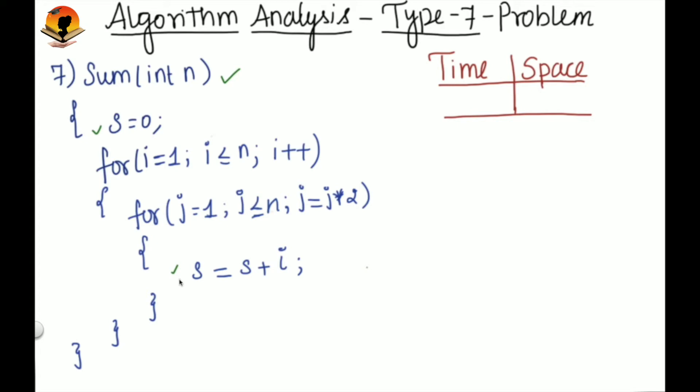Now look at this problem. Here this declaration statement takes one unit of time because it will be executed only once, and then this statement is present inside the nested loop. So we have to find out how many times the statement will be executed, or you can say what is the number of iterations.